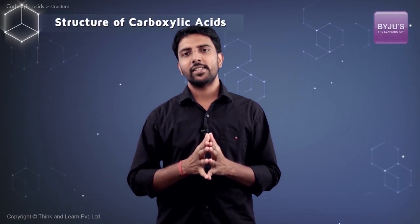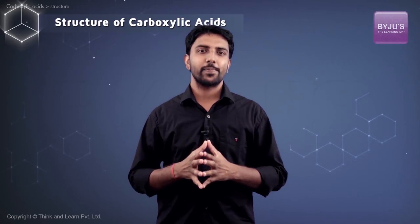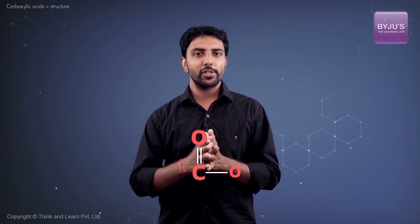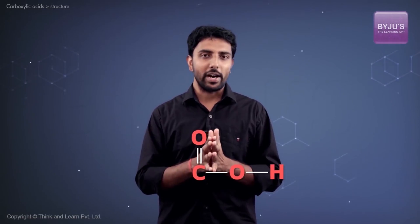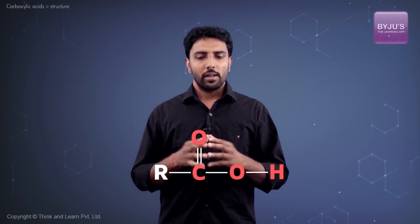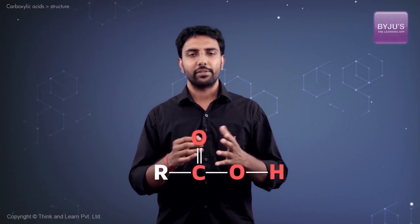Just now, we saw that carboxylic acids are quite useful and that they play a significant role in our lives. So what is a carboxylic acid and how do we recognize one? A carboxylic acid is simply a compound that has a carbonyl group which is attached to an OH group on one side of the carbon atom and a carbon chain on the other. This carbon chain could either be an aromatic ring or an aliphatic chain.